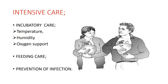Along with incubatory care, feeding is also maintained. As the baby is very weak and cannot suck, feeding is also done by nasal catheter. If breastfeeding is not available, then artificial feeding is used. Next is prevention of infections. As these babies are very weak and their immune system is not well developed, they are more prone to infections like respiratory infections or GIT infections. Death can occur within a few hours if they get infected with any sort of respiratory or diarrheal disease. So prevention of infections is very important in these babies.